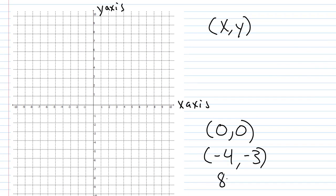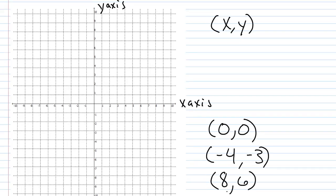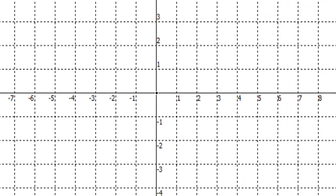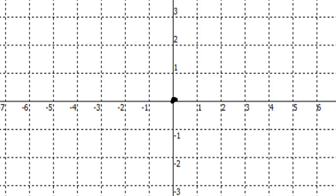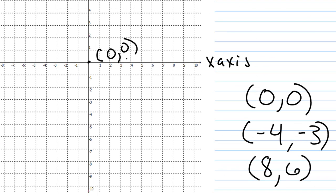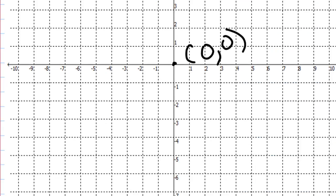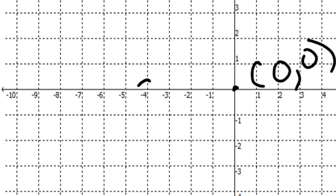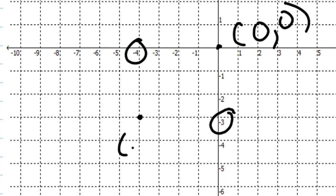(0,0) is the origin—it's right here where the x and y-axis meet each other. Next we have negative 4 comma negative 3, so negative 4 is the x location—I'm going four units to the left. Negative 3 is the y location, so I'm going three units down. Four units left and three units down is right here—this would be negative 4 comma negative 3.